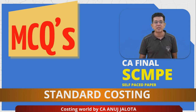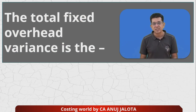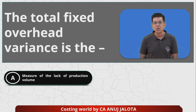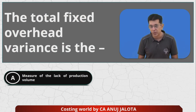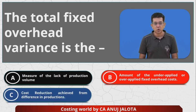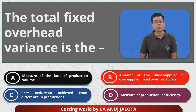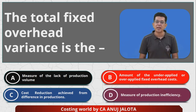The question in this case is: the total fixed overhead variance — four options: A) measure of the lack of production volume; B) amount of under-applied or over-applied fixed overhead costs; C) cost reduction achieved from difference in production; and D) measure of production efficiency. Think of the correct answer before I explain the logic.